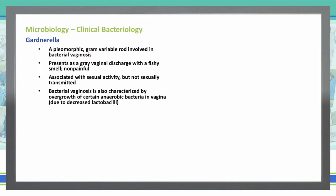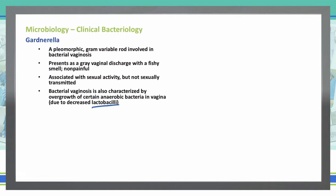It's characterized by overgrowth of certain anaerobic bacteria in the vagina because we have a decrease in the lactobacilli, which is usually the normal bacteria found that helps keep everything working normally.